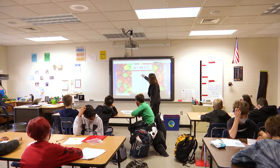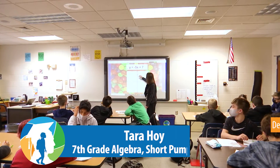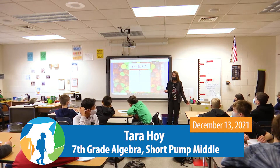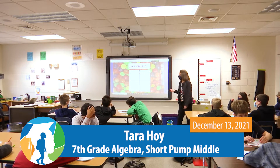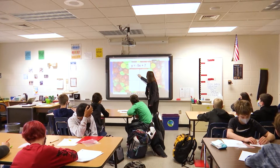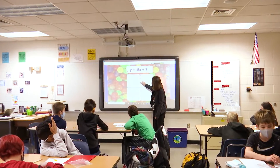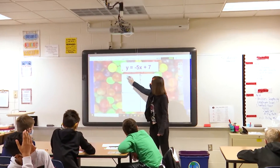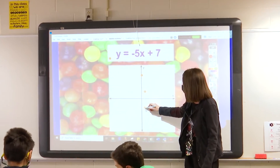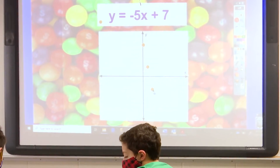So the y-intercept is seven: one, two, three, four, five, six, seven. And then my slope is negative five. How can we write that as a fraction? Negative five over one. So I'm going to go down five and right one. Down five, right one again to draw my third point. Is that what your Skittles look like? Perfect.